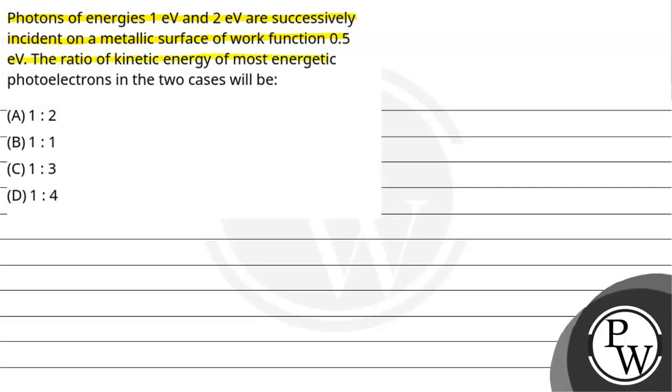The ratio of kinetic energy of most energetic photoelectrons in the two cases will be: Option A, 1:2; Option B, 1:1; Option C, 1:3; Option D, 1:4.